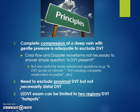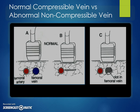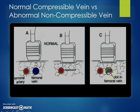The main principles really focus on excluding proximal DVT, not necessarily distal DVT, and we hone in on two hot-spot regions rather than the entire proximal tree. When you compress, the anterior and posterior walls of the vein should completely collapse together and touch, obliterating the lumen with just gentle pressure. If there's a clot, you won't be able to compress the anterior and posterior walls together — it will be a non-compressible vein.